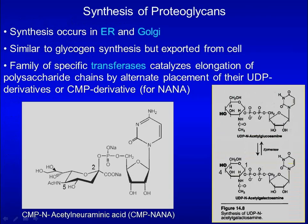Synthesis of proteoglycans occurs in the ER and Golgi, similar to glycogen synthesis but exported from the cell. A family of specific transferases catalyze elongation of polysaccharide chains by alternate placement of UDP-sugar or CMP-sugar.